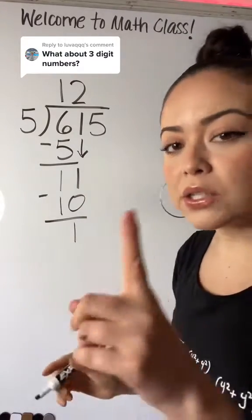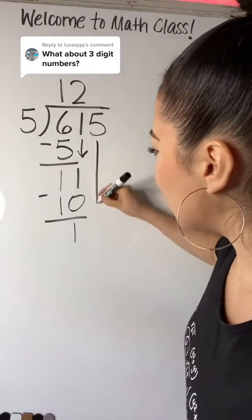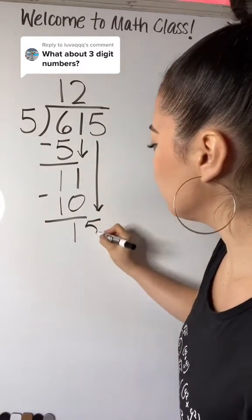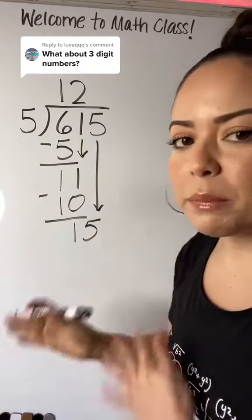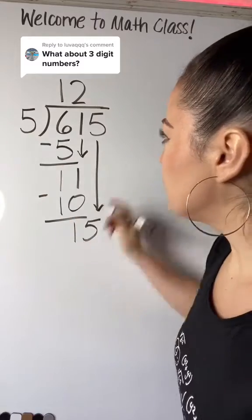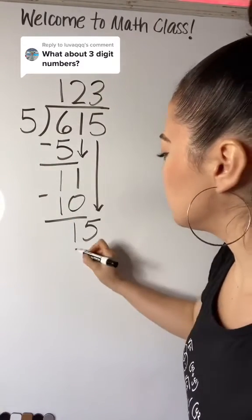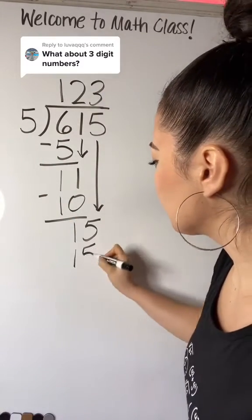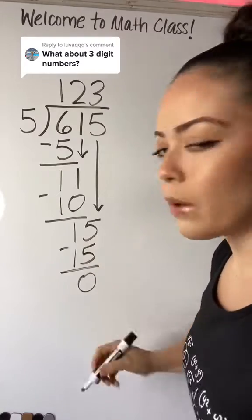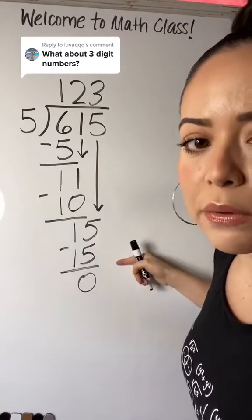And here's the thing — you want to bring down the last digit of that three digit number, which is five, and you repeat the process. Five goes into 15 three times, and three times five is 15. And we have a remainder of zero. I know this is the remainder because there's nothing else to bring down.